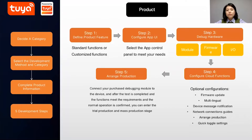The factory with Tuya IoT development platform and the networking modules can quickly and easily take five steps to make their product smart, completing the development of an IoT smart app interface in as little as just one minute.